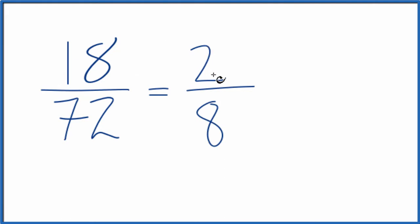So we've simplified this down to 2 over 8. But we can still simplify this further, because we could divide 2 into 2 and 2 into 8.